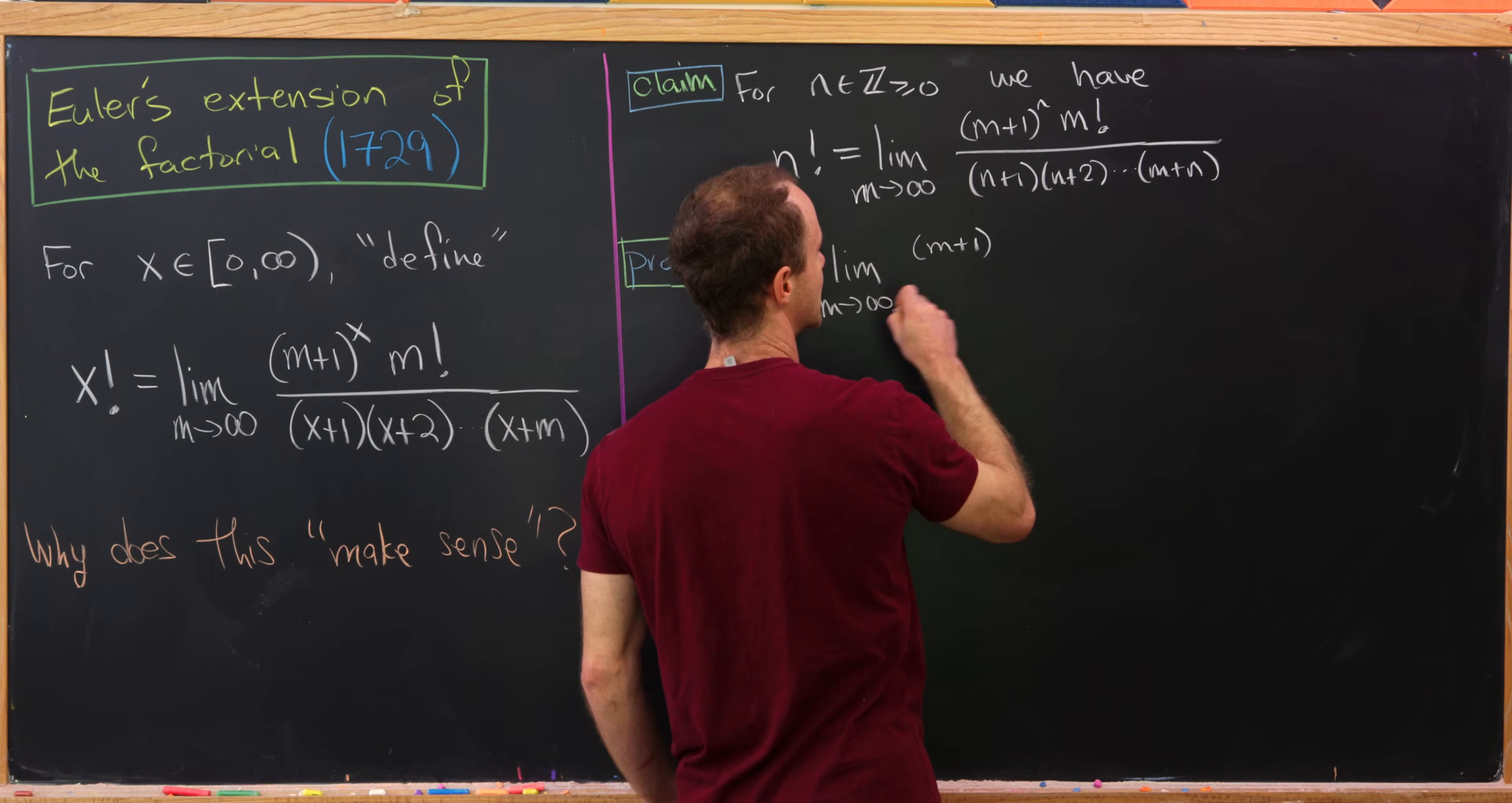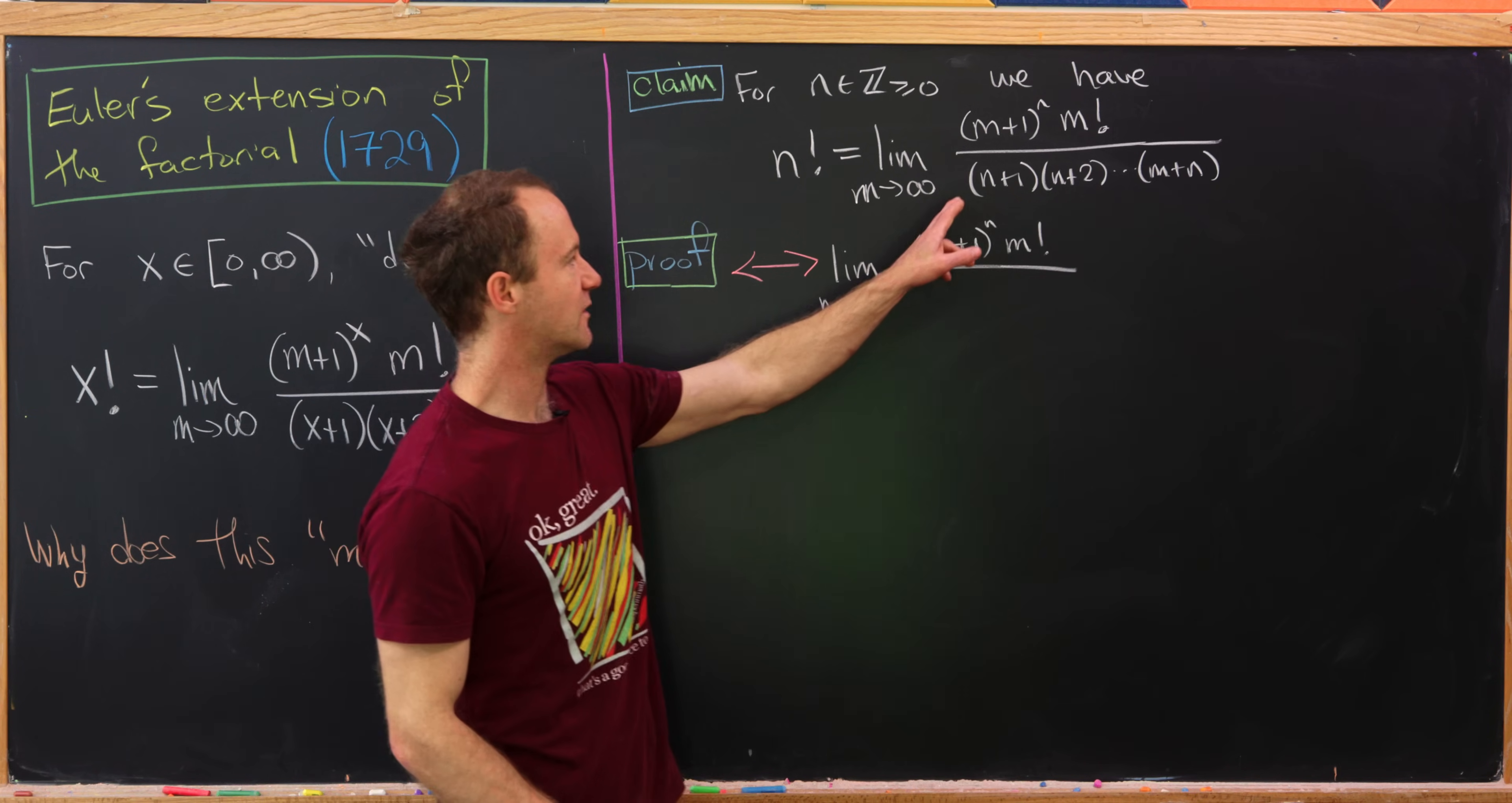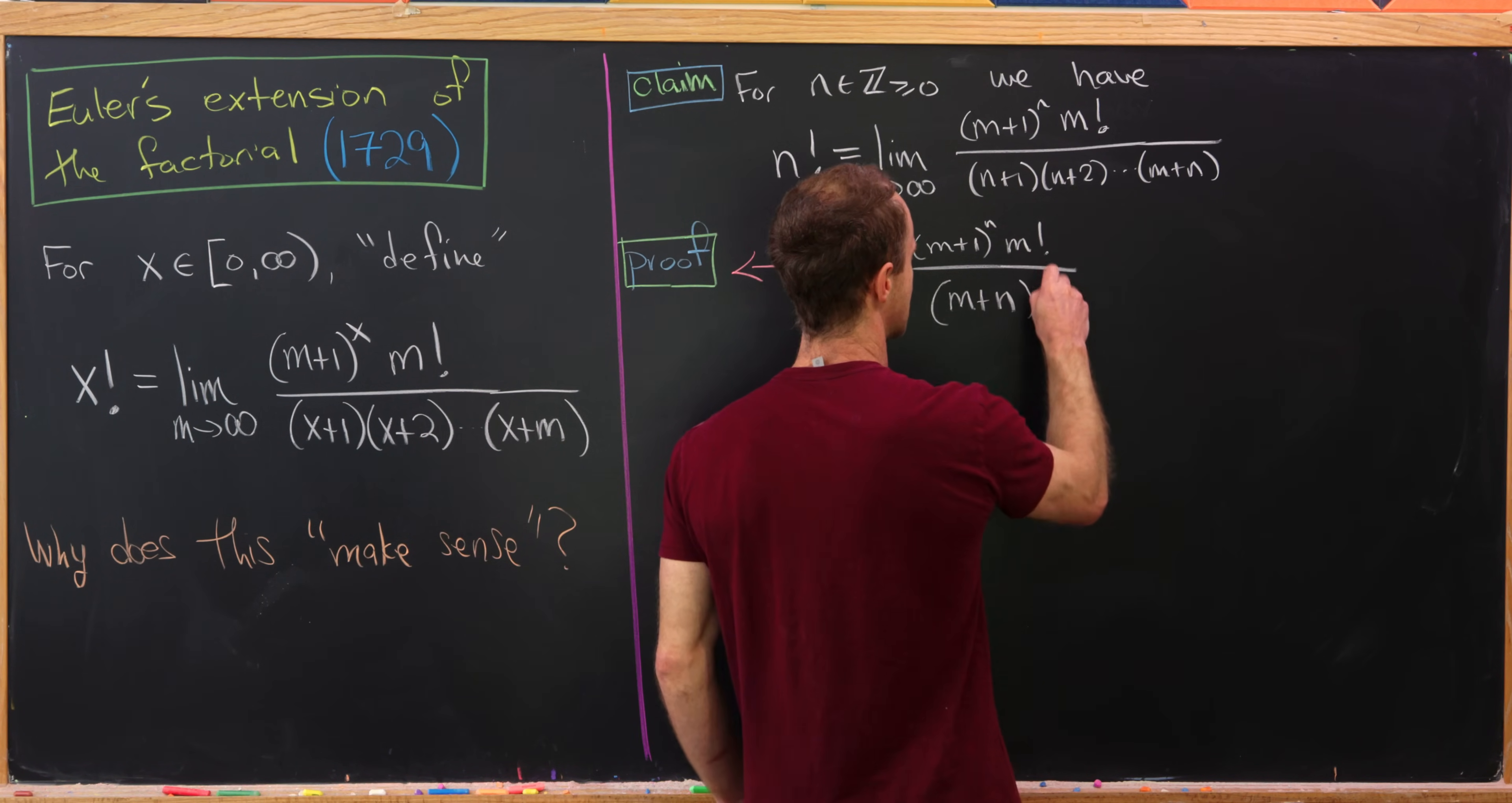I have (m+1)^n times m factorial over now I'm going to divide the n factorial to the other side of the equation, but doing that will fill in everything from the ground up to (n+1) because n factorial is simply one times two times three ending at n. So that means now the denominator will be (m+n) factorial.